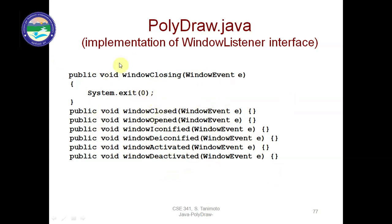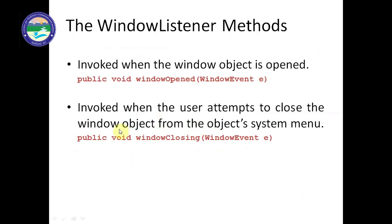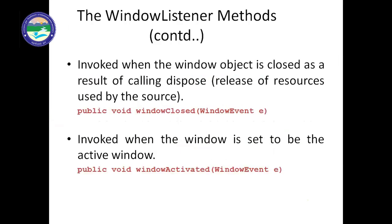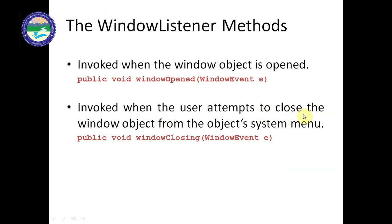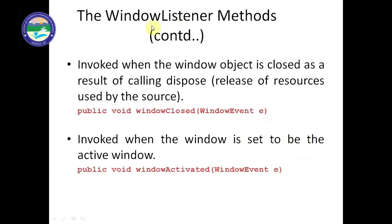The meaning of all these functions is as follows. windowOpened is invoked when the window object is opened — when we open the window or click the open function from the right mouse button menu, this event will generate. windowClosing is invoked when the user attempts to close the window object from the system menu — when we click the close button, this event activates. windowClosed is invoked when the window object is actually closed.